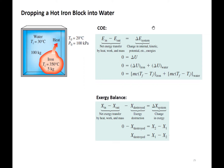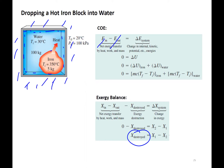I think we left off on this example last class where we were looking for X-destroyed. Our system is the water and the iron, and it's well insulated. So no energy is crossing our boundary. Neglecting kinetic and potential energy, we just have the change in microscopic internal energy, which is iron plus the water — the change in the iron plus the change in the water.